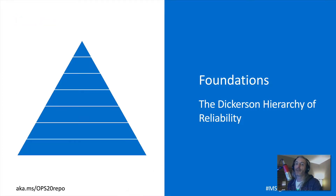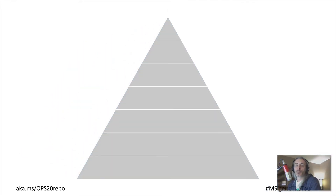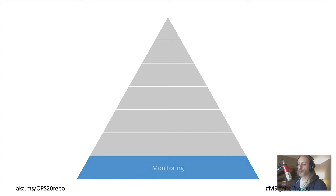Many of the things we're going to be discussing today are foundational concepts around incident management, deploying, and building, which are foundations to building reliable systems. If you attended the OPS 10, 20, or 30 sessions, you'll recall the Dickerson Hierarchy of Reliability. For those who weren't there or don't recall, we'll take a few moments to understand our objectives.